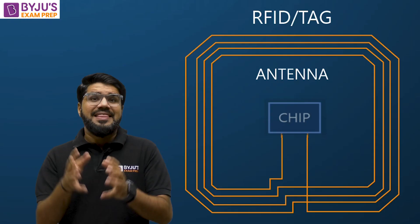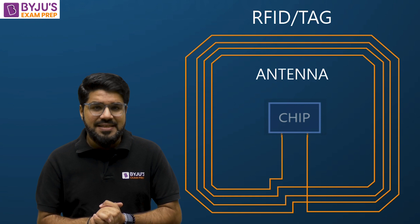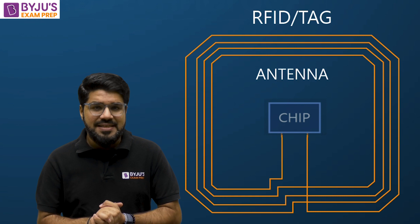RFID has two essential components: number one, the RFID reader; number two, the RFID tag. When the tag is brought closer to the reader, the reader transmits radio waves. That in turn causes the flow of electrons in the tag's antenna, which in turn activates the chip inside the tag. The chip is essentially used to store data in digital form.